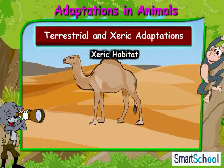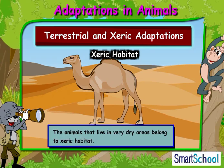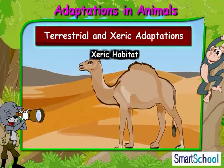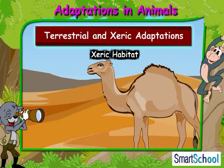Now let us take the example of camel to understand the xeric habitat. Animals that live in very dry areas belong to the xeric habitat. In order to protect from sandstorms, camels have long eyelashes. This is one type of adaptation that camels have for their habitat.